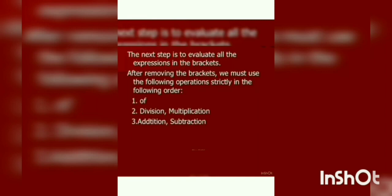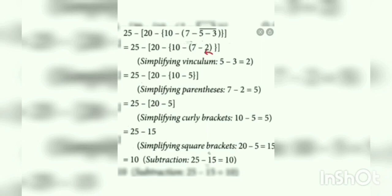We learn the BODMAS rule through an example. Here we have been given: 25 minus square bracket 20 minus small bracket 7 minus vinculum (5 minus 3), and all brackets closed. As we have discussed, first we solve the vinculum, which contains 5 minus 3, giving you 2.